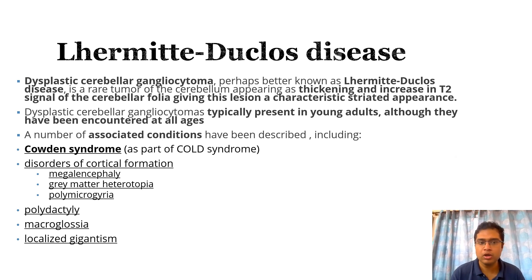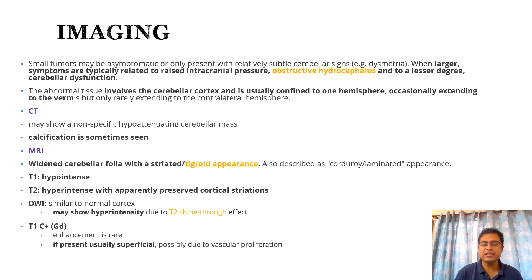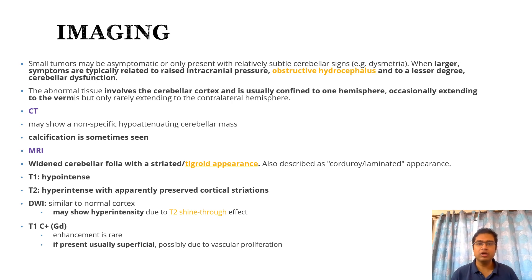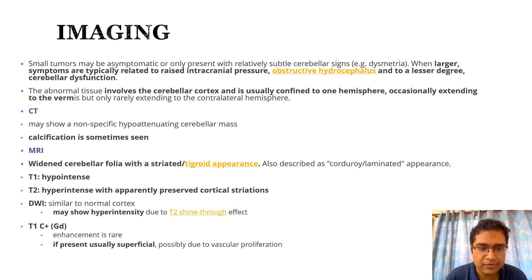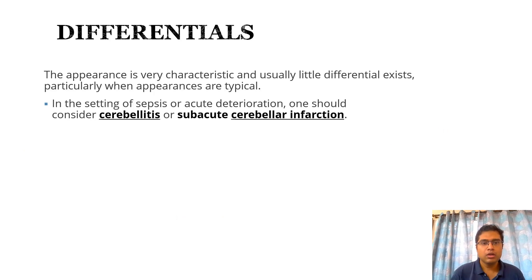Macroglossia and localized gigantism have also been seen with this disease. Small tumors may be asymptomatic. On CT, calcifications are sometimes seen. On MRI, it gives a striated or tigroid appearance due to widened cerebellar folia, appearing hypointense on T1 and hyperintense on T2. It affects a particular cerebellar hemisphere, occasionally extending to the vermis, but does not extend to the contralateral hemisphere. Subtle superficial enhancement may be seen due to vascular proliferation.